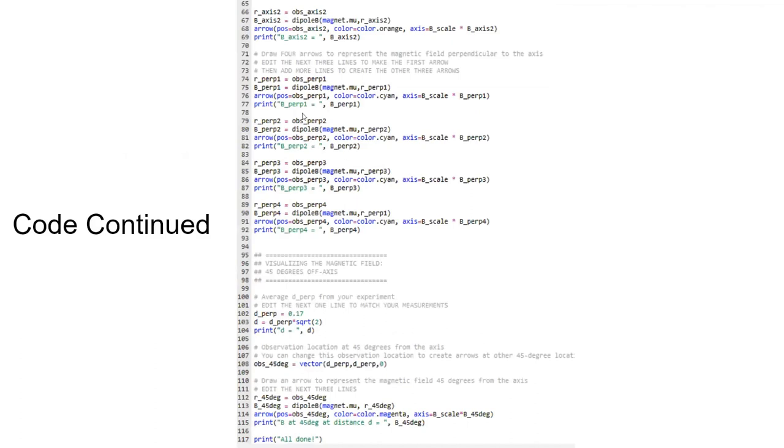This is the scale and distance used for the arrows representing the field. So these were the vectors for the field arrows. And then over here, these were the arrows that represent the field. So this was on-axis, on-axis, and then these four were the perpendicular component. And then down here, this represents the magnetic field when it was at a 45 degree angle.